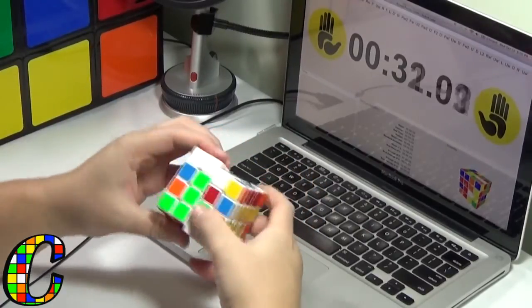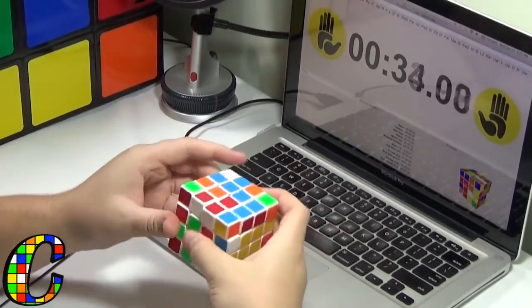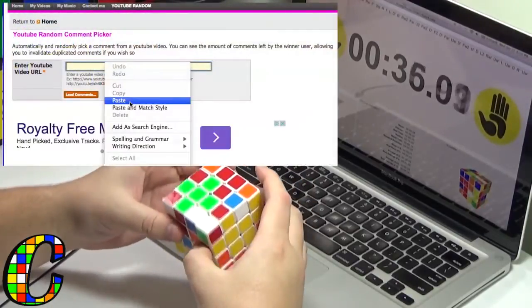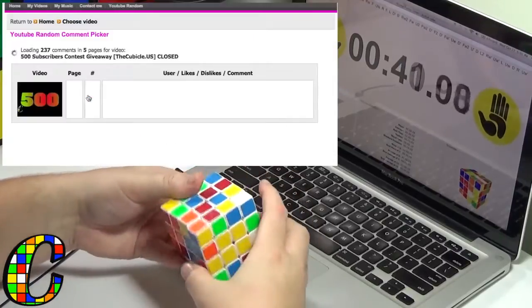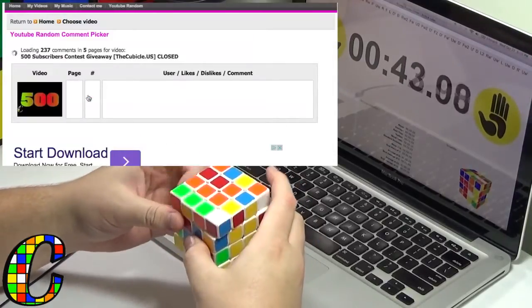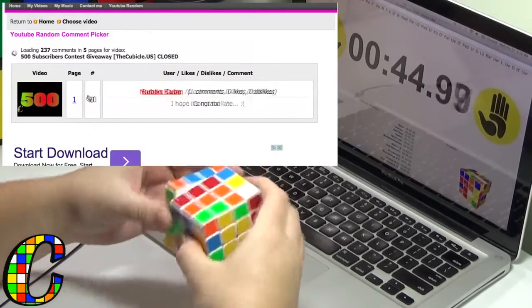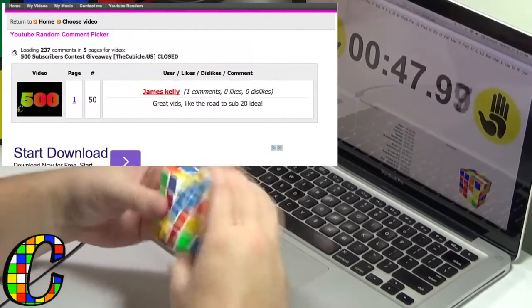So let's get to the competition results. I used a random comment picker that I found on Google. It's really reliable, I tested it out a few times for my 100 subscribers giveaway. What you do is you just load all the comments, I think there was like 175, 200 something like that.